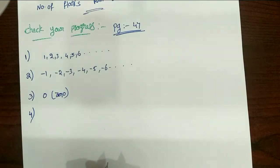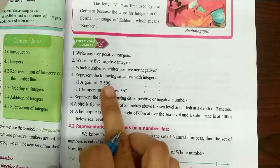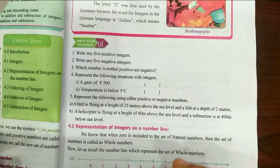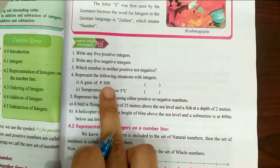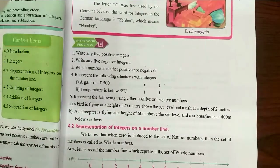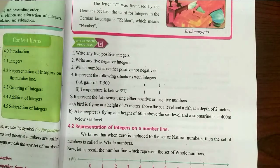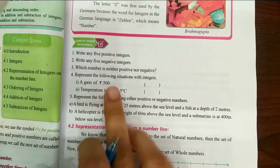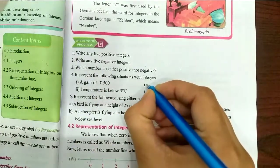Next, fourth one: represent the following situations with integers. Here you have a situation — a gain of 500 rupees. If you have a gain, it will be positive. So here you write plus 500.